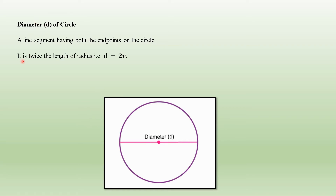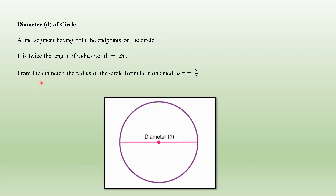One point to keep in mind: the diameter of the circle is twice the length of the radius. We have a simple formula — diameter is equal to 2r. From the diameter, the radius can also be obtained by the formula: r is equal to d divided by 2.